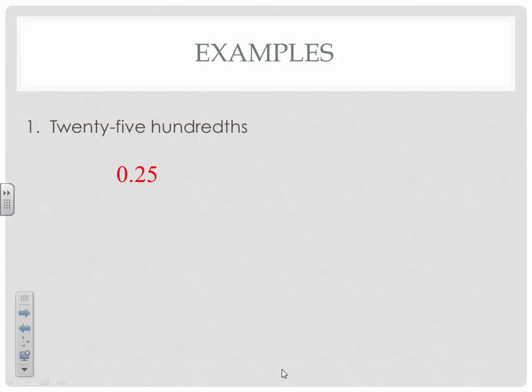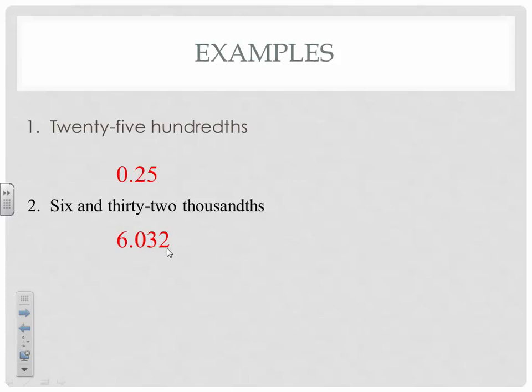We'll try another one: six and thirty-two thousandths. Remember that the word 'and' tells you it's a decimal point — go ahead and try it. Here's the six; the next places are tenths, hundredths, thousandths, so the 32 goes in the thousandths place. Notice that we have an extra place — that's where the zero comes from, giving us 6.032.